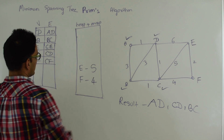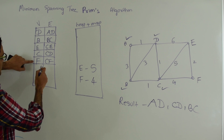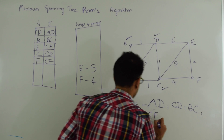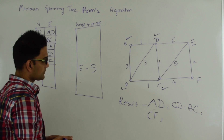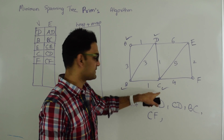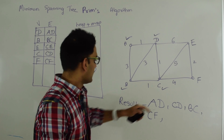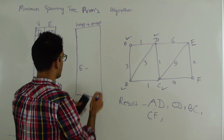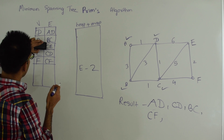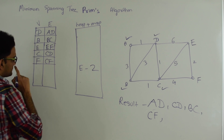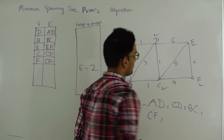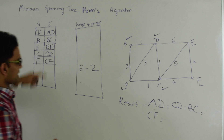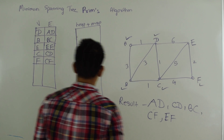We do another extract-min — F,4 comes out. We check who introduced F: that's edge C-F, which goes into the final result. We remove F from the heap-plus-map and explore F's neighbors. Neighbor C: not in the data structure, so we ignore it. Neighbor E: E's current value is 5, while this edge has weight 2, so we replace 5 with 2 and record that E is now coming from edge E-F.